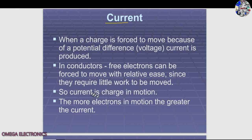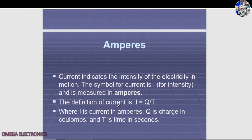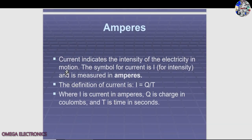Current is charge in motion — it is defined as the motion of charge. The more electrons in motion, the greater the current, so current is directly proportional to electrons in motion. The unit of current is amperes. Current indicates the intensity of electricity in motion; its symbol is I, standing for intensity, and it is measured in amperes.